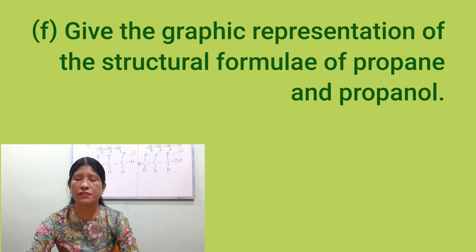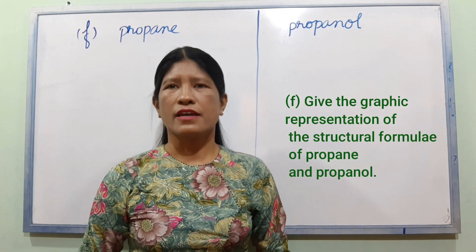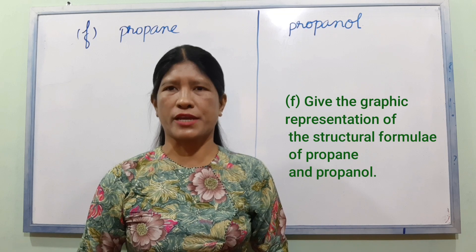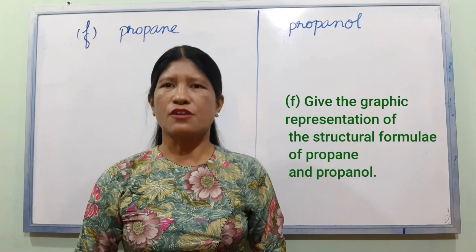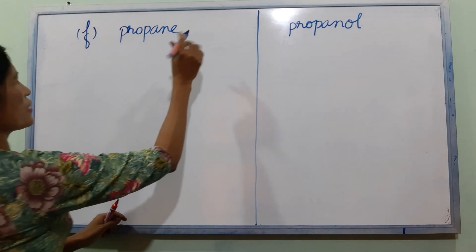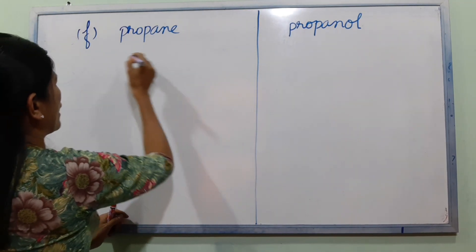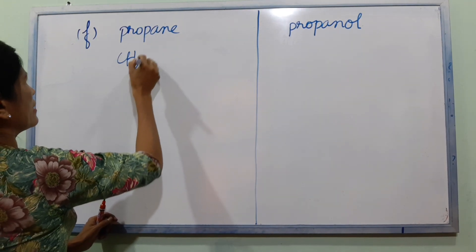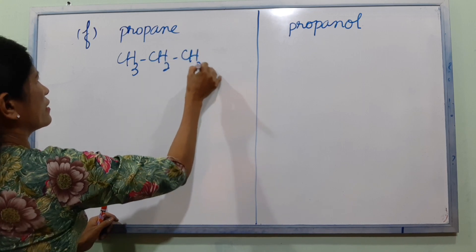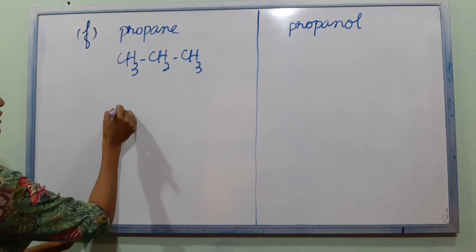Give the graphic representation of the structural formula of propane and propanol. The structural formula of propane is CH₃CH₂CH₃. We will go through the graphic structure for both propane and propanol.